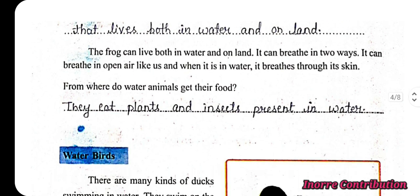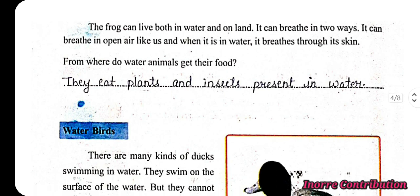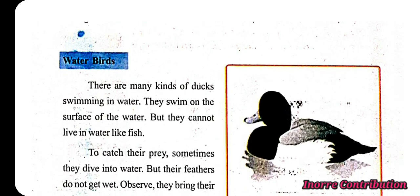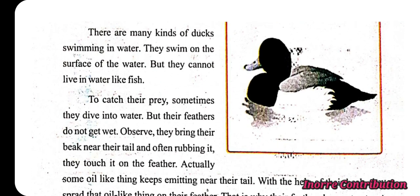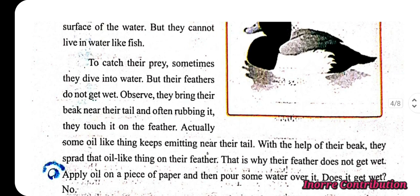From where do water animals get their food? They eat plants and insects present in water. There are many kinds of ducks swimming in water. They swim on the surface of the water but cannot live in water like fish. To catch their prey, sometimes they dive into water, but their feathers do not get wet.